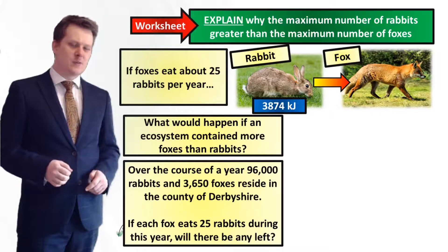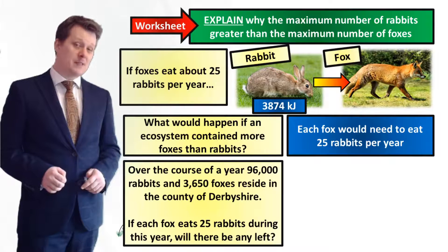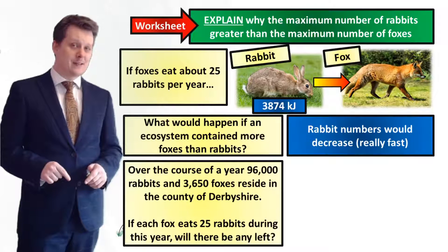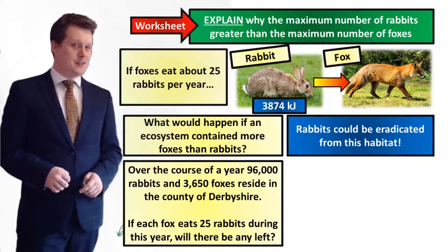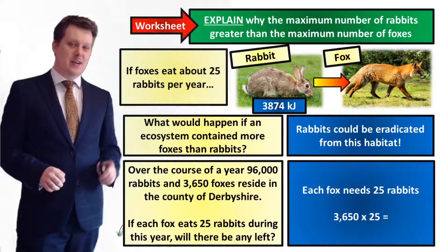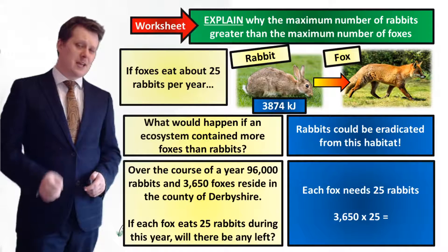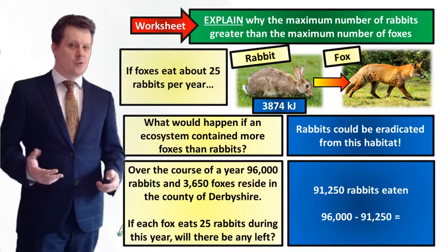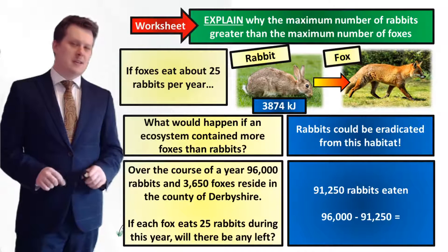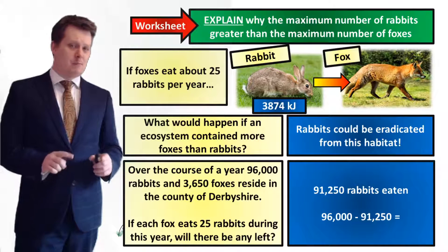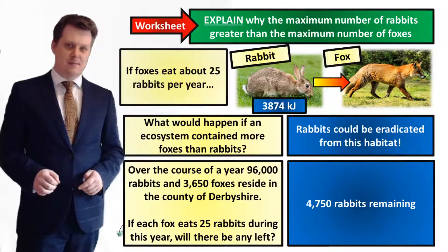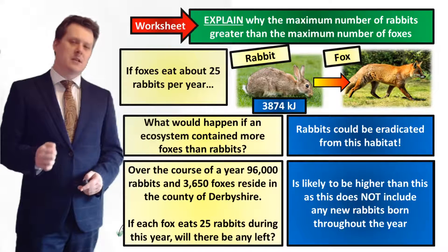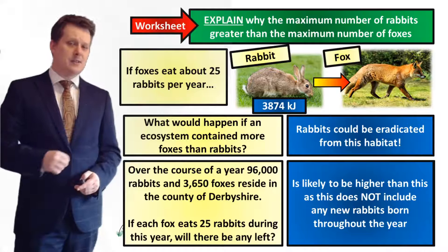If the number of foxes was greater than the number of rabbits and each fox needs to eat 25 rabbits per year, then the number of rabbits is going to decrease rapidly — which means the rabbits could be wiped out from this habitat. For Derbyshire: each fox needs to eat 25 rabbits, so 3,650 foxes times 25 gives us 91,250 rabbits eaten. We then subtract from our starting 96,000: 96,000 minus 91,250 gives us 4,750 rabbits remaining. However, the actual number remaining would be a lot higher, because this doesn't include any new rabbits born, and doesn't account for any foxes which could have died throughout the year and haven't eaten their 25 rabbits.